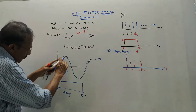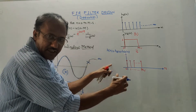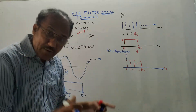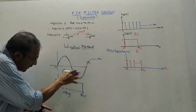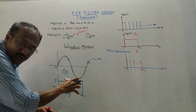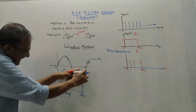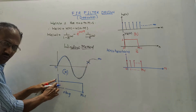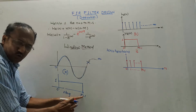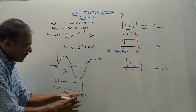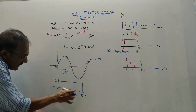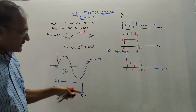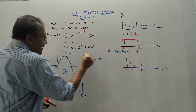Why is it called the window method? Because the original signal extends to infinity, and I don't want to filter an infinite signal all at once. So I take out only the required portion by multiplying the entire signal — which extends to infinity — with a function whose amplitude is 1 and which is present from 0 to some finite value, 0 to M minus 1. This concept is known as the windowing method.